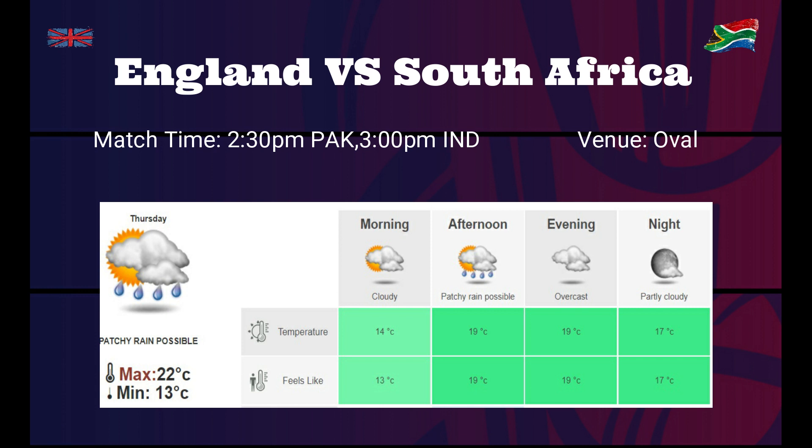If we look at the forecast for The Oval for tomorrow, it seems it would be cloudy in the morning and there are chances of light rain as well in the second half of the innings, as the match will start around 10:30 am England time. It would be better for the team to win the toss and bowl first, as cold weather will help the seamers. It will also depend on the pitch — if there is a little grass, go for bowling, as both weather and pitch help seamers. But if the pitch is dry or without grass, then breeze will be the only helping factor for bowlers.